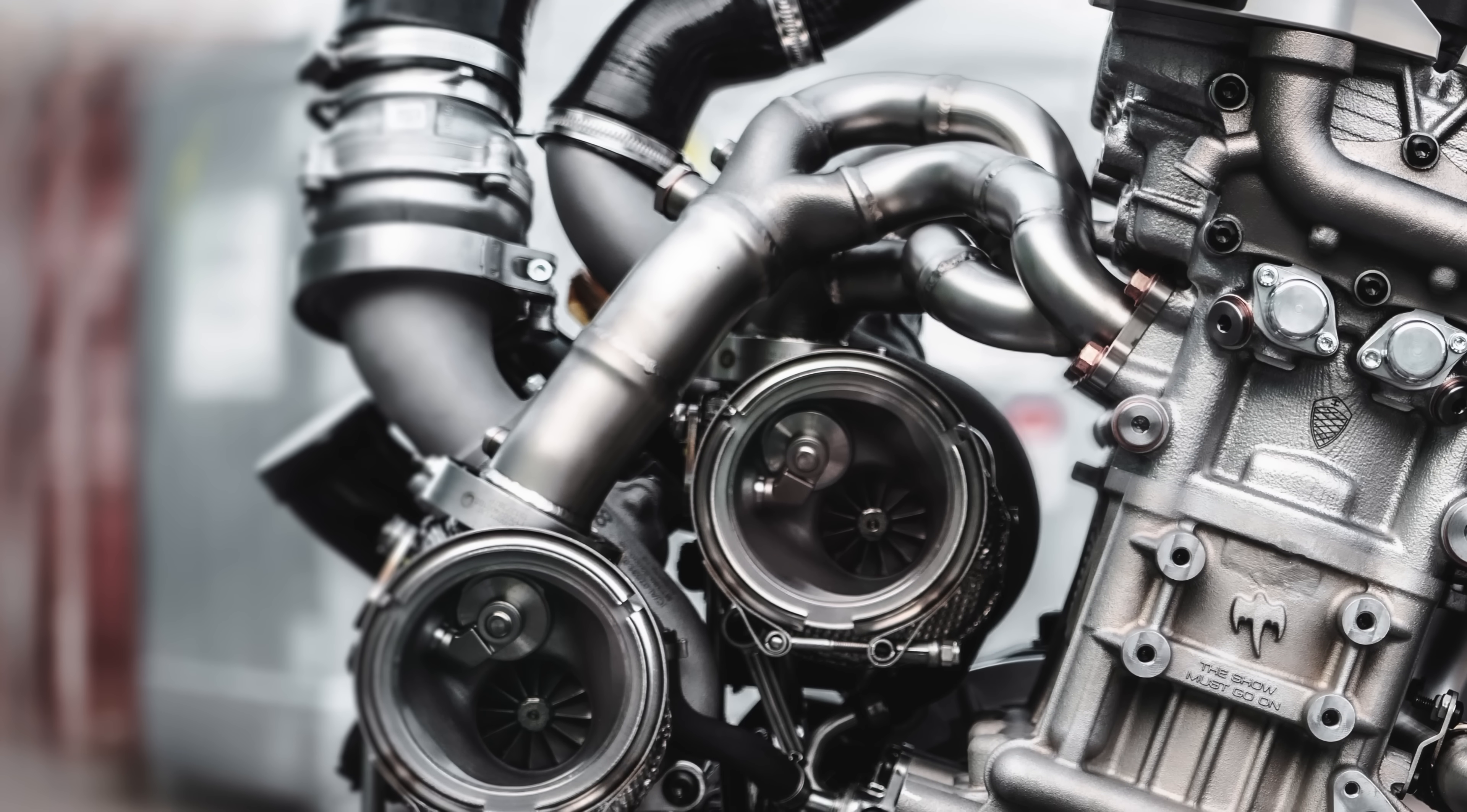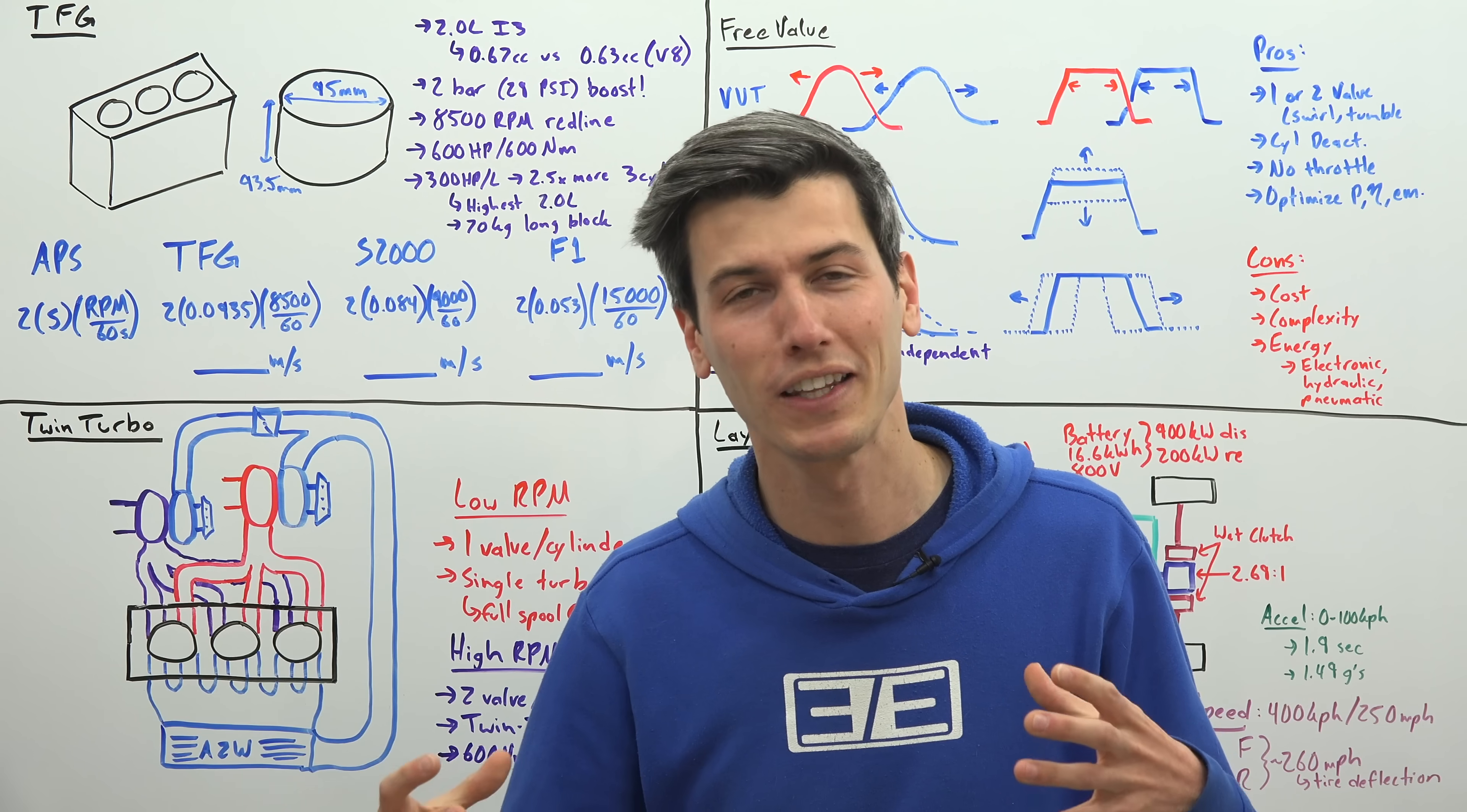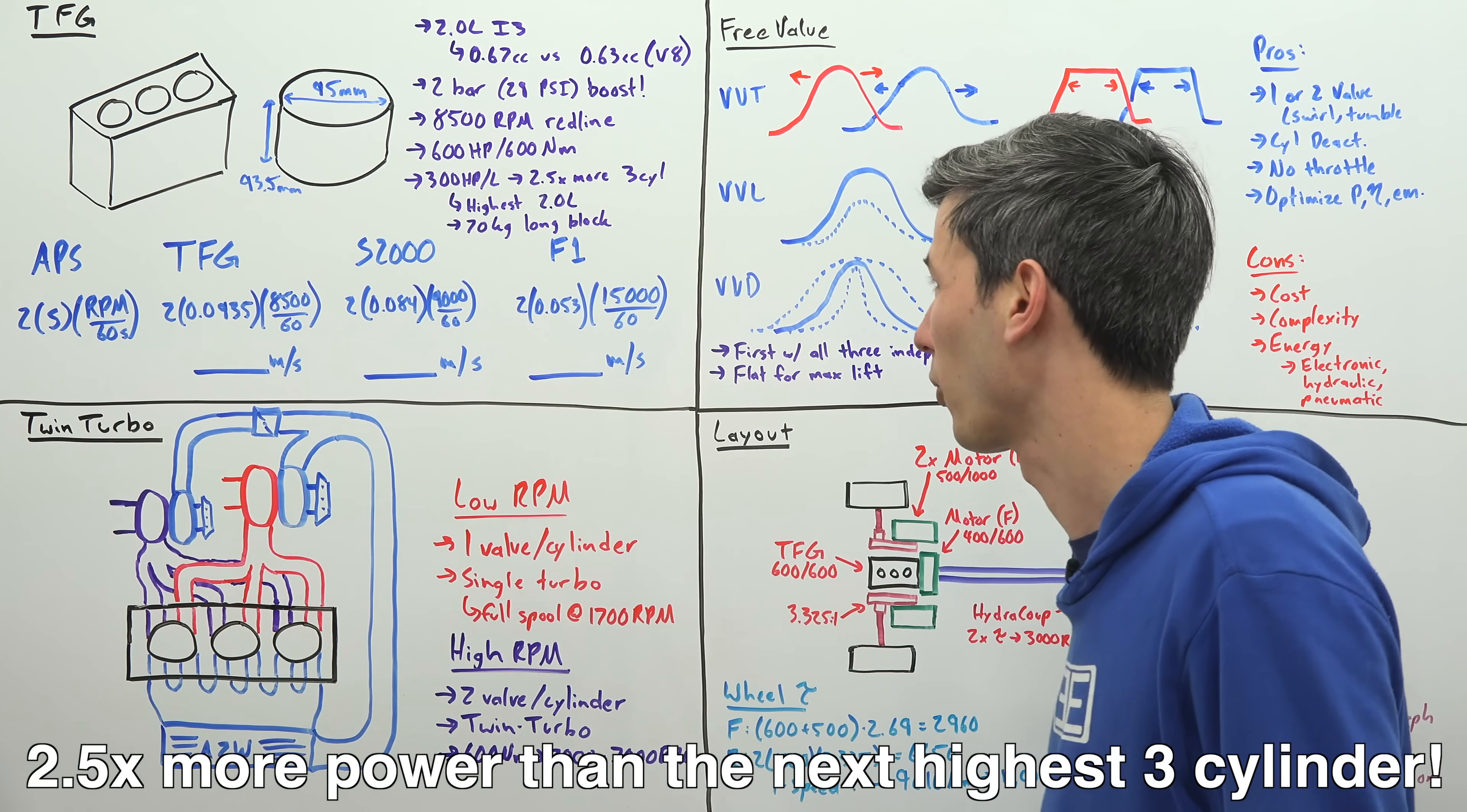So it has 2 bar 29 psi of boost pressure and it revs to 8500 rpm. So you can kind of think of it like a Honda S2000 engine, which was naturally aspirated, and tripling the amount of air that goes inside of that engine. So you can make 600 horsepower, 600 newton meters of torque. 300 horsepower per liter, which Koenigsegg says is 2.5 times more than the next highest rated three-cylinder engine. This is the most powerful road-going 2-liter engine and it only weighs 70 kilograms.